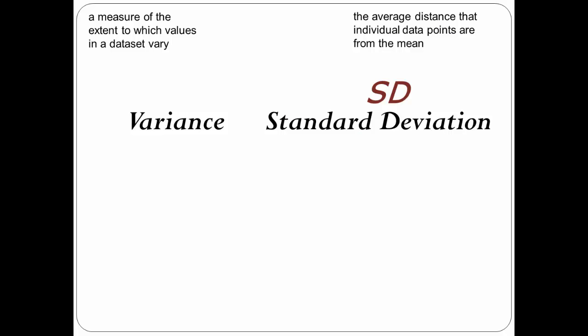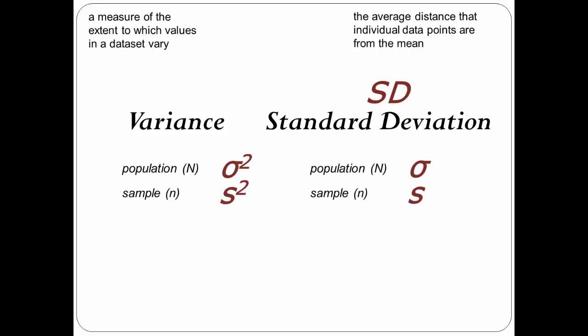Just a quick review related to the symbols used in the formulas and the relationship between variance and standard deviation. Remember that the symbols for each differ based upon if you are referencing a population or a sample. Remember, too, that the square root of variance is standard deviation, meaning that if you know how to calculate variance, it is one more simple step to calculate standard deviation.